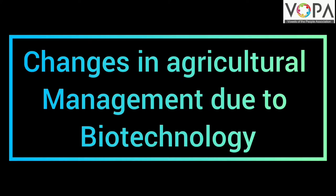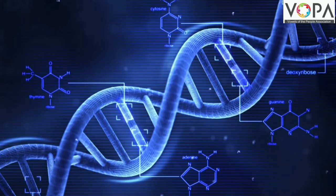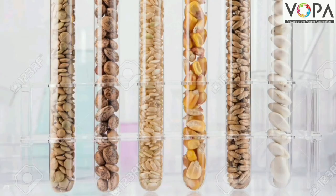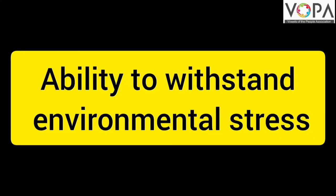Today we will see the changes in agricultural management due to biotechnology. First, genetically modified crops — GM crops — are being produced by introducing changes in the DNA of natural crops. Normally such varieties are not found in nature, thus new varieties are produced artificially and different useful characters are introduced in such varieties.